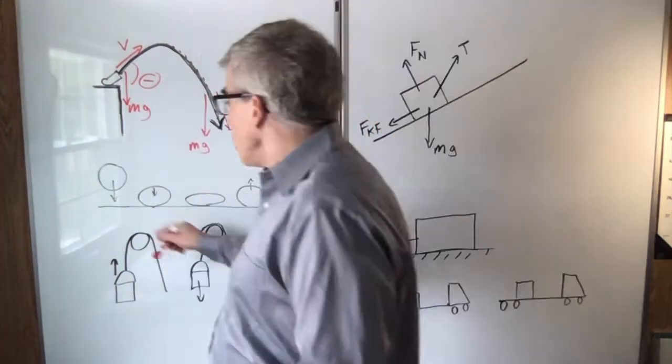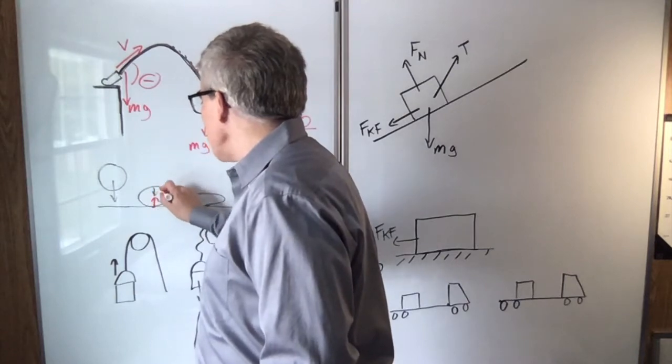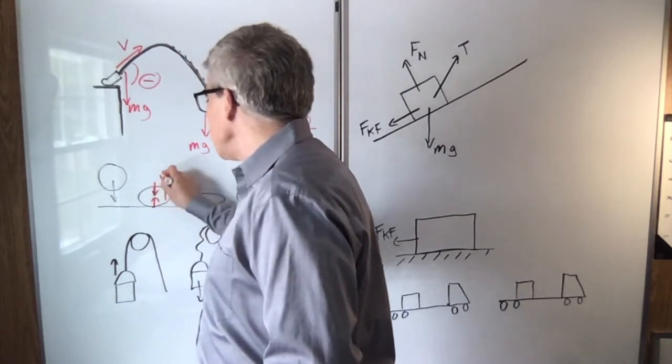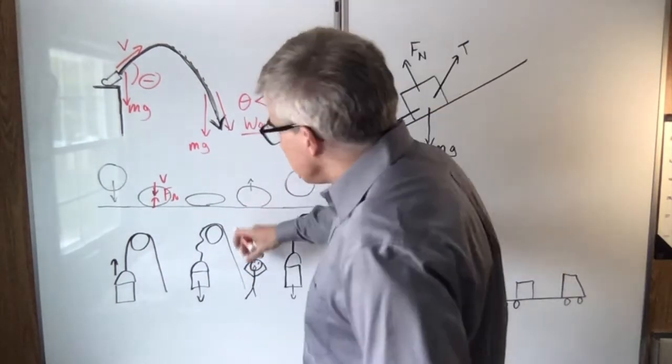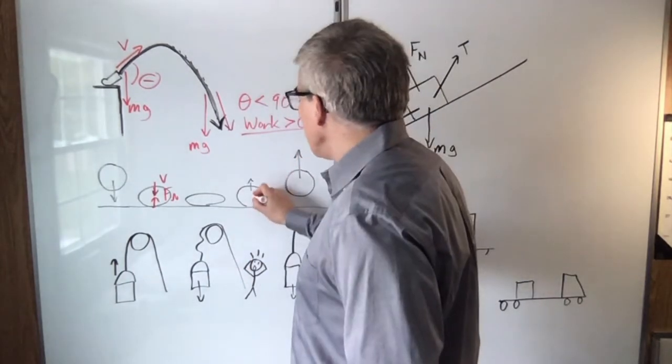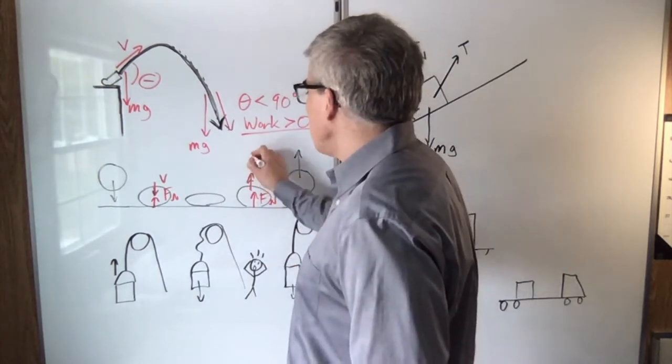The ball bouncing off the floor. When it contacts, the normal force is upward, but the velocity is downward. So that's doing negative work. It is slowing it down. But then, as it starts to rebound, the normal force is up and the velocity is also up. So that does positive work.